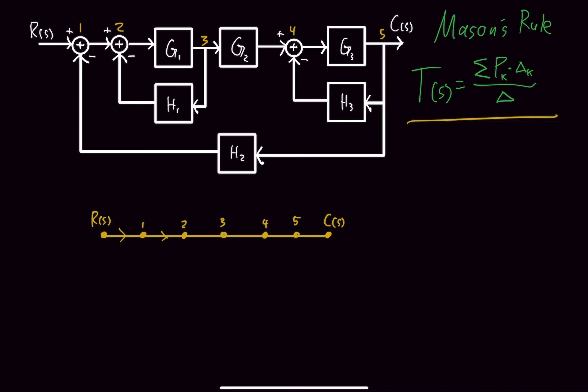Now the arrows. So from R(s) to point 1 nothing happens, so it's multiplied by 1. From 1 to 2, nothing happens, multiplied by 1. From 2 to 3 we go through G1. From 3 to 4 we go through G2. From 4 to 5 we go through G3. Then from 5 to the output we go through 1.